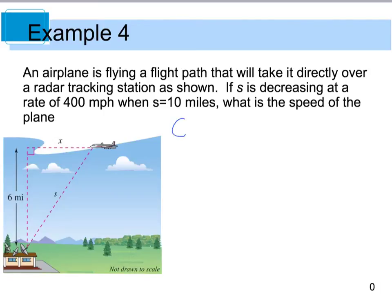So the first thing we need to do is identify what is given. If you look back here, we have that s is decreasing at a rate of 400 miles per hour. So because s is decreasing, this is going to be our ds/dt, and the decreasing tells us that it's a negative 400 miles per hour.